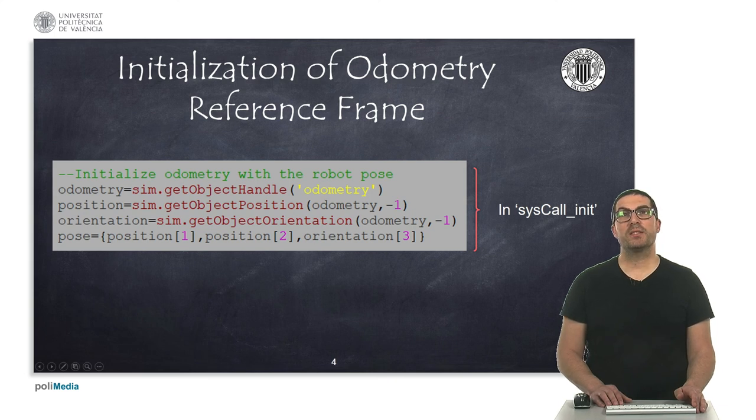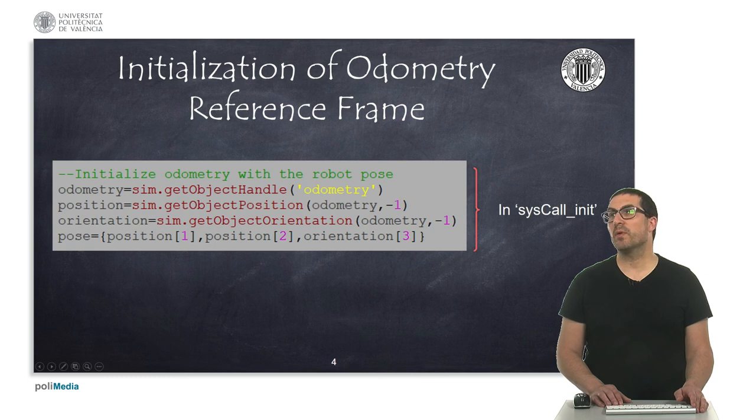So next, we need to add the following code in syscall init function to obtain the odometry system handle and initialize the robot configuration as I'm indicating here, from the position and the orientation of this dummy.